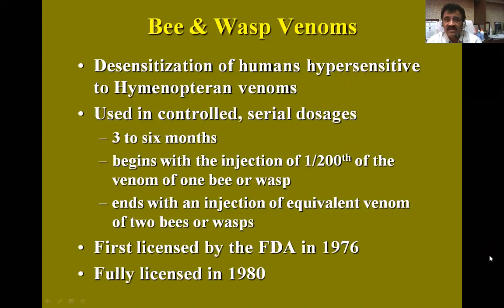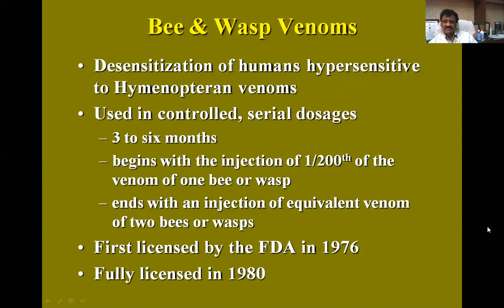Bee and wasp venoms which cause desensitization in humans hypersensitive to Hymenoptera venoms are used in controlled serial doses over three to six months. It begins with the injection of one two-hundredth of the venom of one bee or wasp, and ends with an injection equivalent to the venom of two bees or wasps.